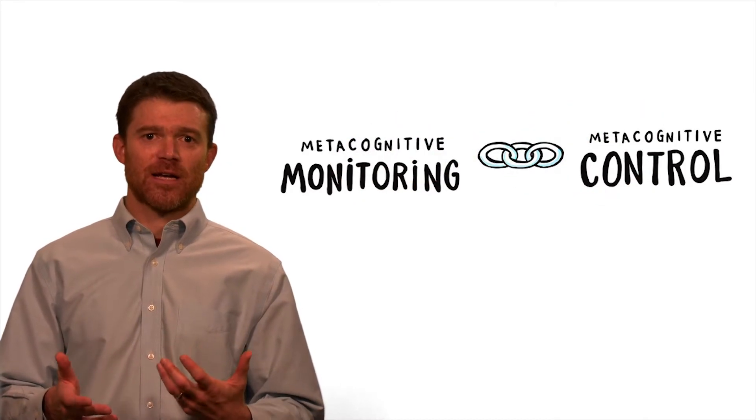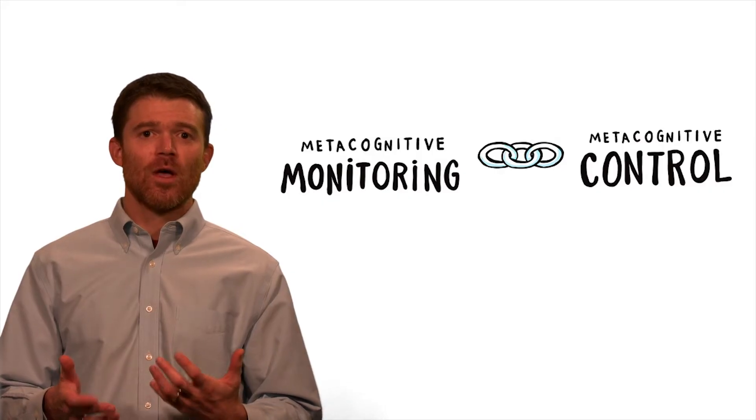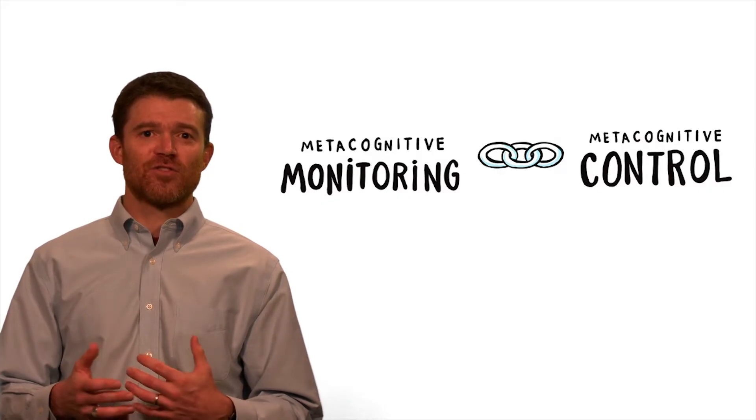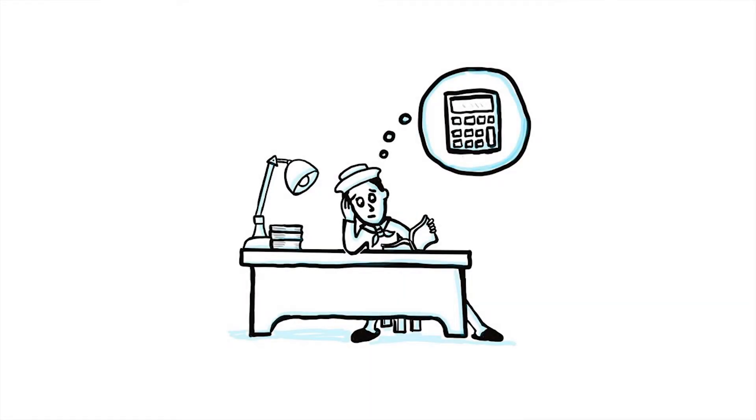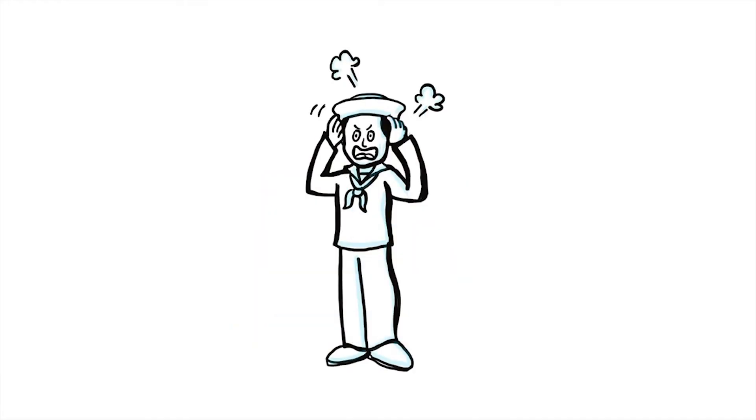To help illustrate metacognitive monitoring and control, let's consider the experiences of Joe on a recent homework assignment. Joe spent over an hour on one problem and was still unable to arrive at the correct answer. Joe thought that if he kept working harder, re-entering the calculations into his calculator and looking over his work, he would figure out his mistake. But he didn't. Joe became frustrated and, as a result, lacked the motivation to attempt the other problems.